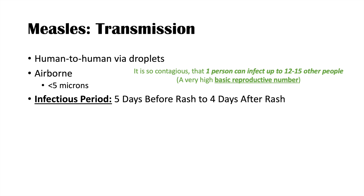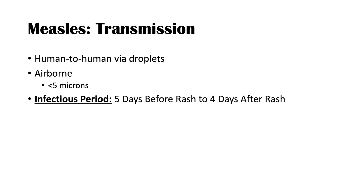This all ties in with the infectious period — the period of time in which an individual who has measles can transmit it and infect other people. The infectious period is estimated to be from five days before the rash starts up to four days after the rash has started.